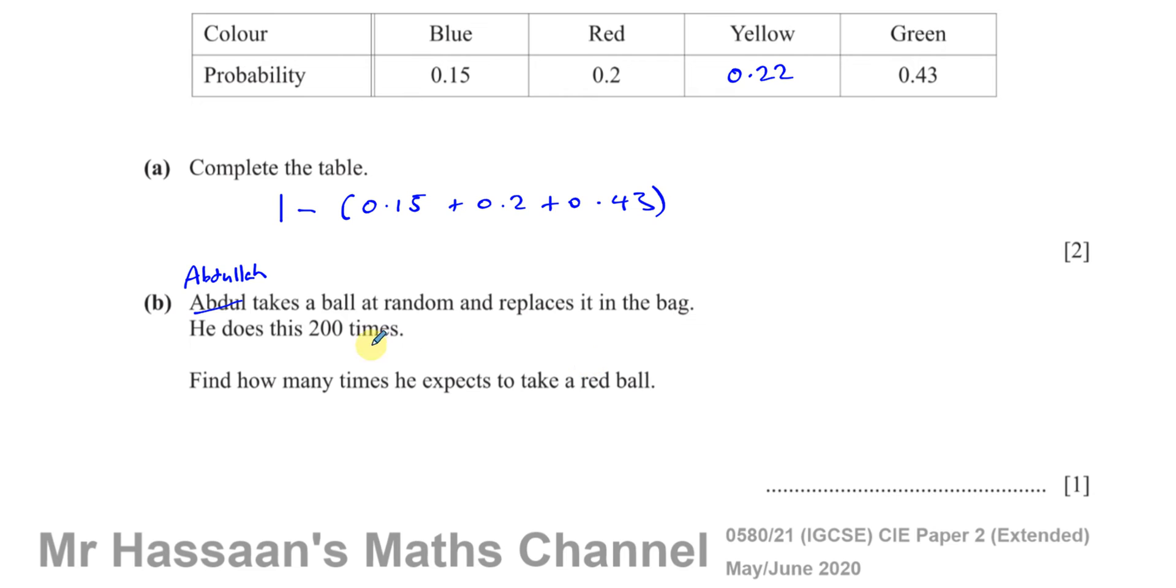This is called theoretical probability. If you do the actual experiment, you're not going to always get exactly the same as the theoretical probability—you've got experimental probability. But what you would expect is you would roughly have the same as the theoretical probability.